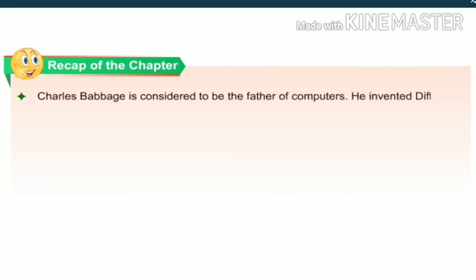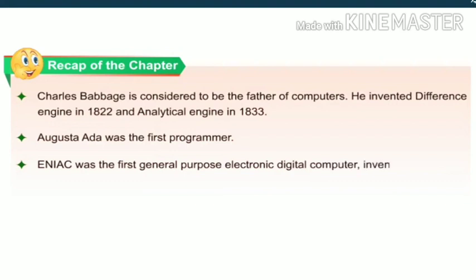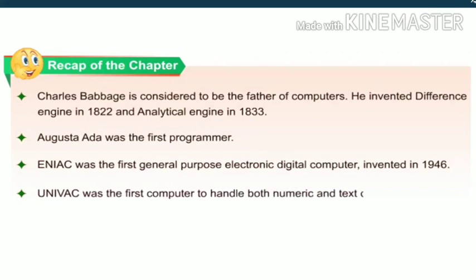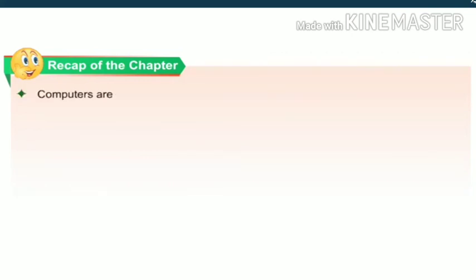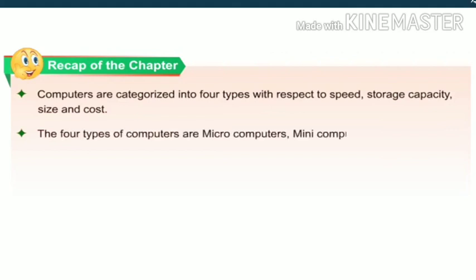Let us quickly glance through the key points discussed in this chapter. Charles Babbage is considered the father of computers — he invented the Difference Engine in 1822 and the Analytical Engine in 1833. Augusta Ada Lovelace was the first programmer. ENIAC was the first general-purpose electronic digital computer, invented in 1946. UNIVAC was the first computer to handle both numeric and text data. Computers are categorized into four types — microcomputers, minicomputers, mainframe computers and supercomputers — with respect to speed, storage, capacity, size and cost.